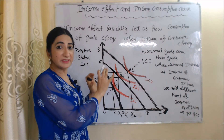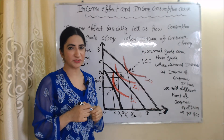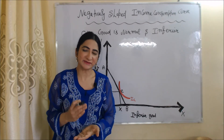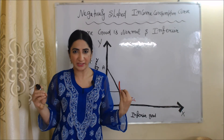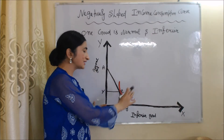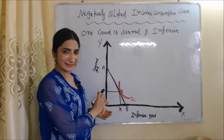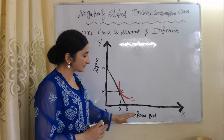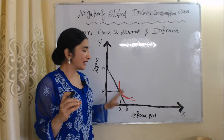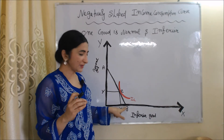Now we are going to talk about the negatively sloped income consumption curve. We will clearly understand this with the help of this diagram. In this diagram, on the x-axis we have an inferior good and on the y-axis we have a normal good. AB is the budget line and IC is the indifference curve.